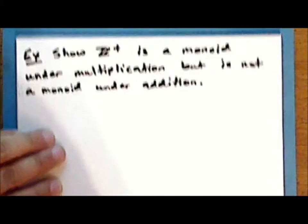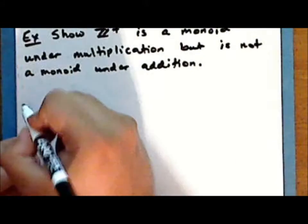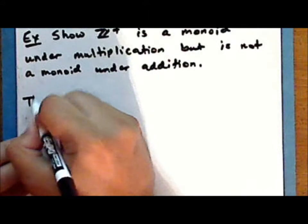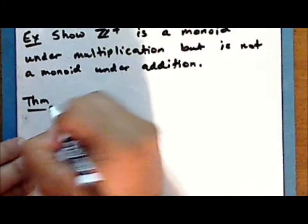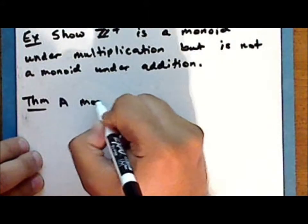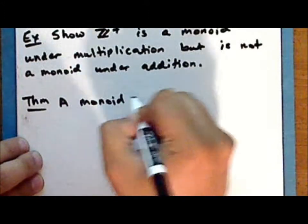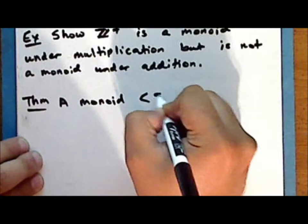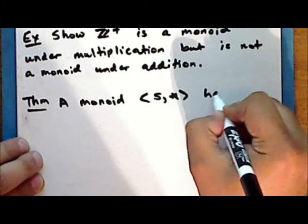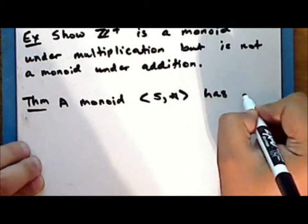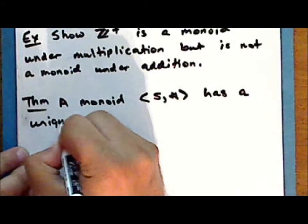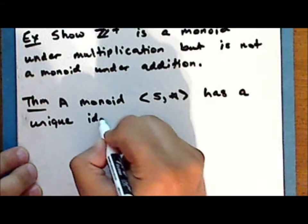Next we'll show that the identity element is unique, and we'll state this as a theorem. A monoid, consisting of an underlying set S together with the binary operation star, has a unique identity element.